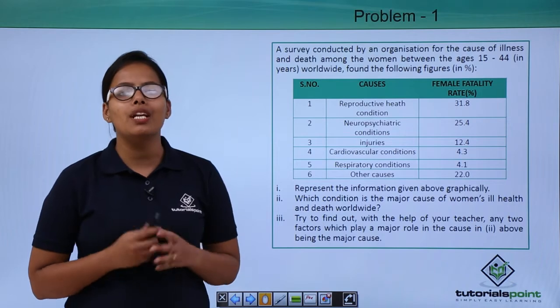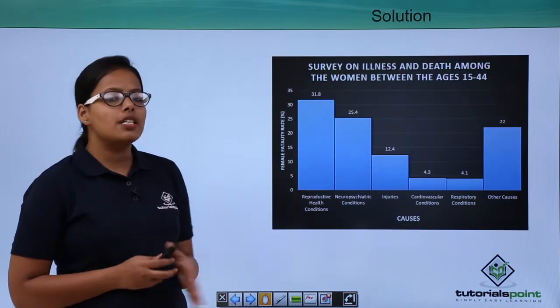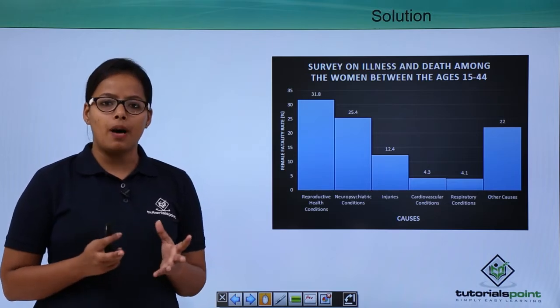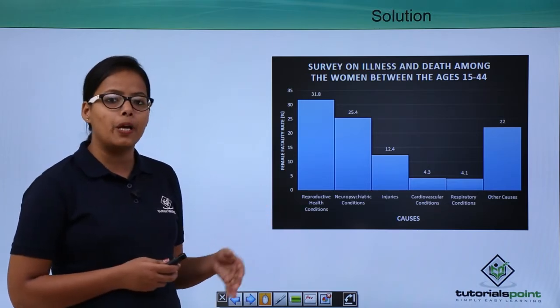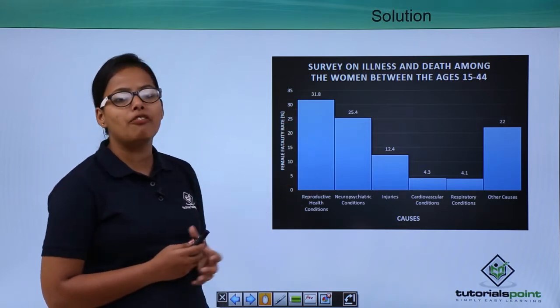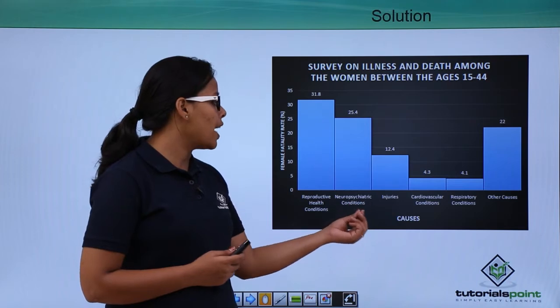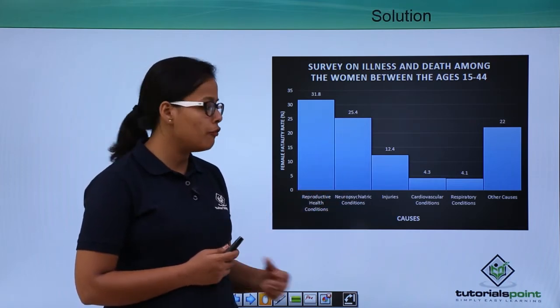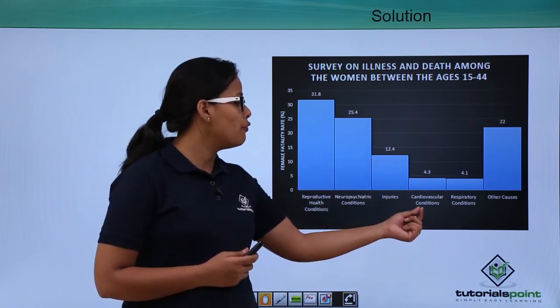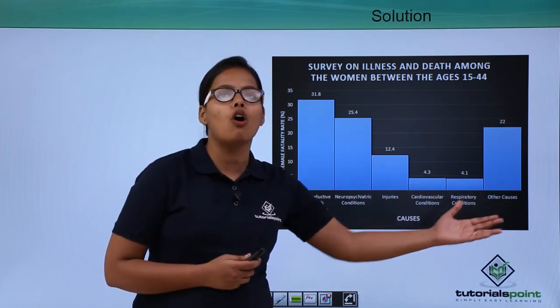Now let's first plot the graph for this table. We'll use a bar graph because this is an ungrouped table. For reproductive health conditions, the female fertility rate is highest at 31.8. For neuropsychiatric conditions it's 25.4, injuries 12.4, cardiovascular conditions 4.3, and so on for all other causes.